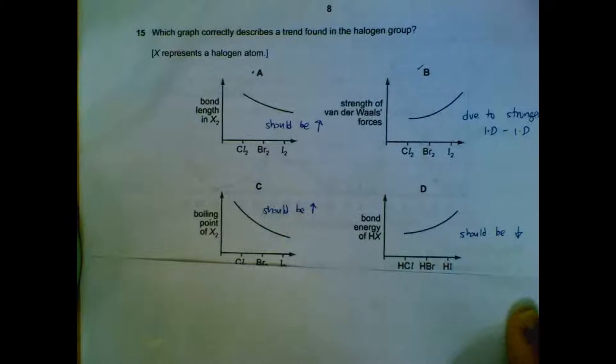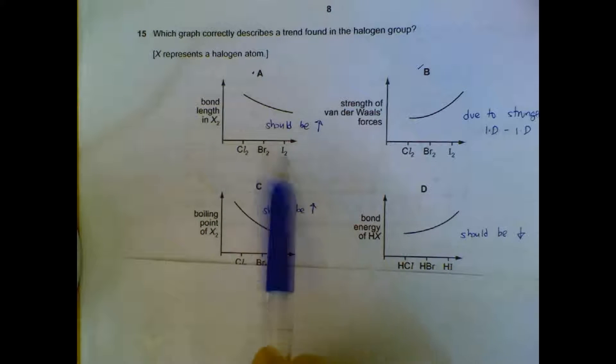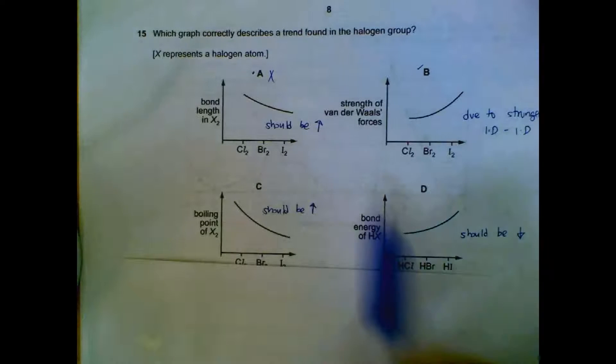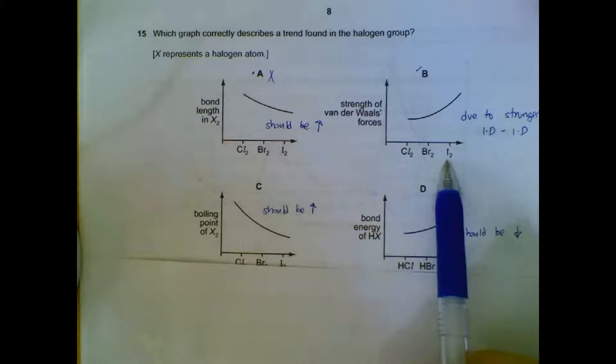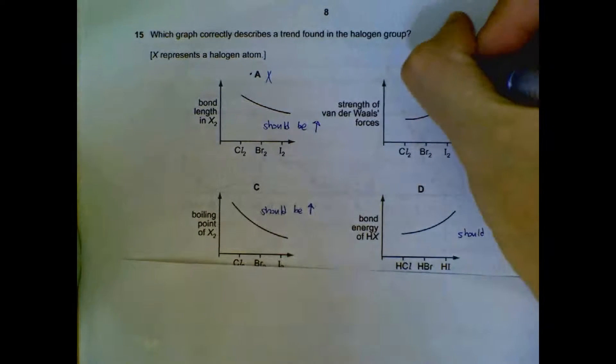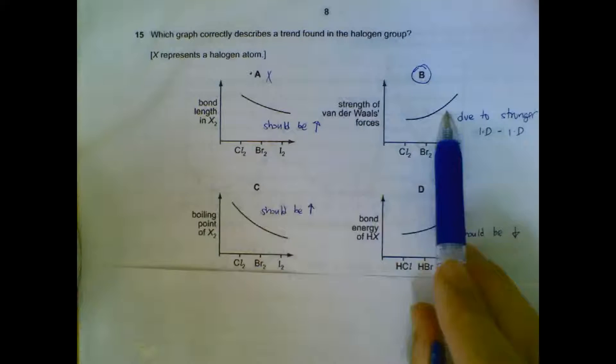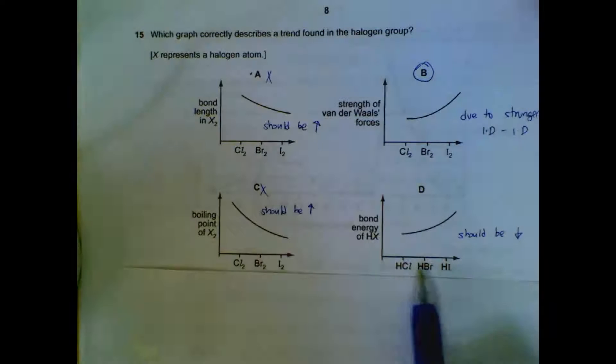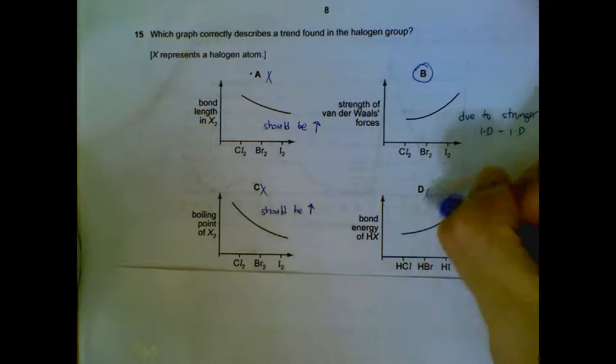Question 15. What is the trend for the halogens? If you look at the bond length, bond length should be increasing, not decreasing. Van der Waals forces - as you go down the group, they get bigger molecules, we have stronger instantaneous induced dipole, so we have stronger intermolecular attraction. It should be increasing. Boiling point should also be increasing due to stronger intermolecular attraction, so C is wrong. Boiling point should be increasing, bond energy should be decreasing due to the increasing bond length. So answer is B.